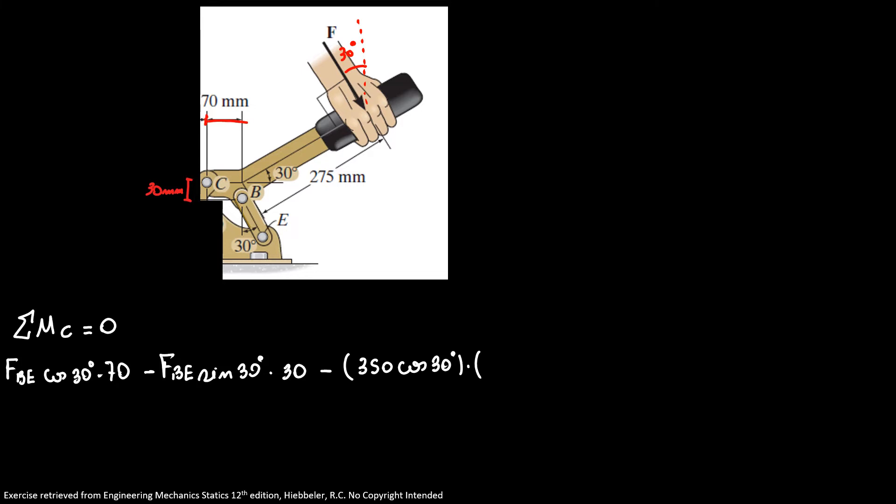So 70 plus 275 cosine of 30 minus 350 cosine of 30 times our distance 275 cosine of 30 is equal to zero.